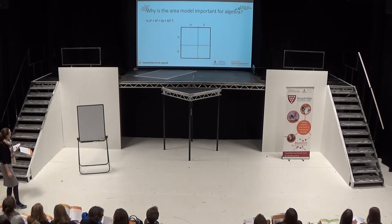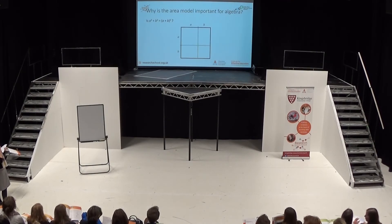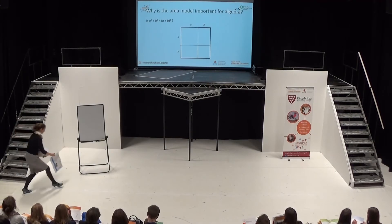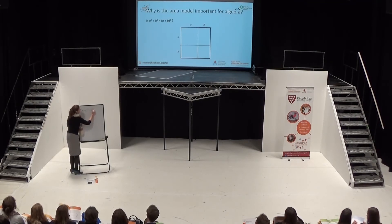Splitting that one large shape into four shapes: the top left is the square A squared, the one in the bottom right is B squared, but that doesn't account for those two rectangles which are B times A and B times A — the two AB pieces. So A plus B is the length and the height multiplied together, meaning A plus B squared is equivalent to A squared plus 2AB plus B squared.